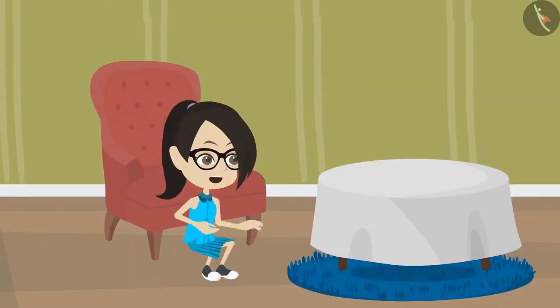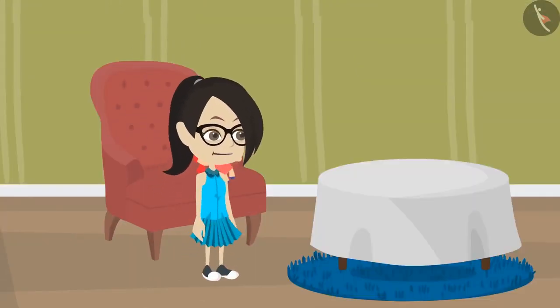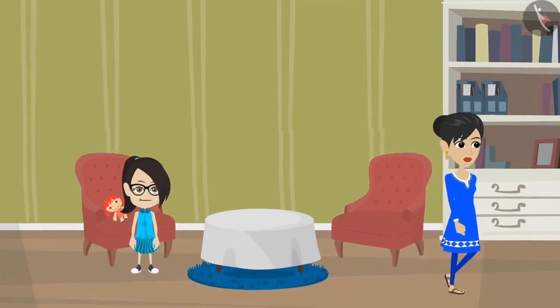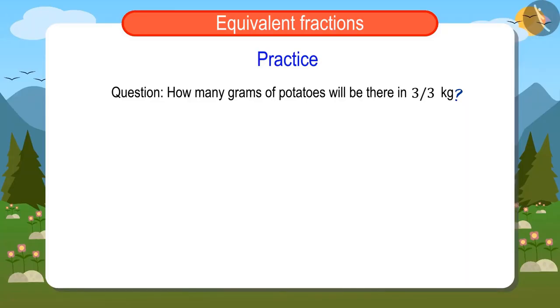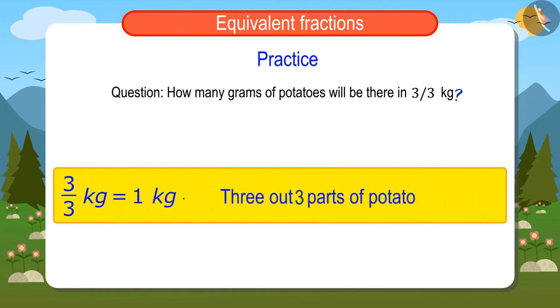Okay, Mammy, I will find out and get the potatoes. Let us together find out how many grams of potatoes will be there in 3 upon 3 kilograms. 3 upon 3 means 3 out of 3 parts. That is, of a kilogram of potatoes, all 3 parts.